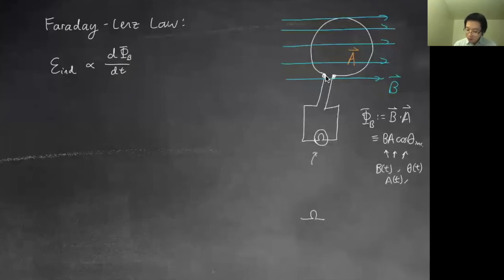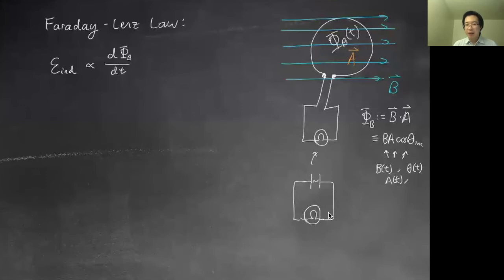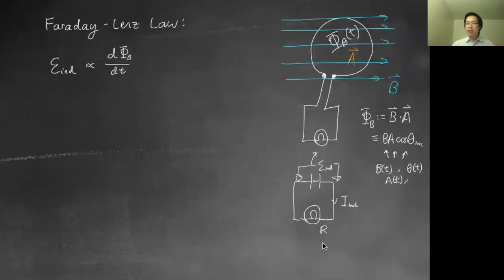As far as the light bulb is concerned, it almost thinks it is connected to a battery. As long as you are able to change the flux inside here — if you can make the flux change as a function of time — you'll be able to provide a potential difference and induced EMF. As soon as you have induced EMF, you can calculate the current. The current is most dependent on whatever resistance you put in the circuit.